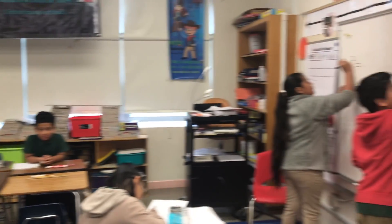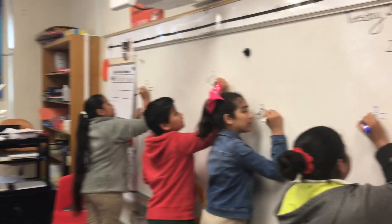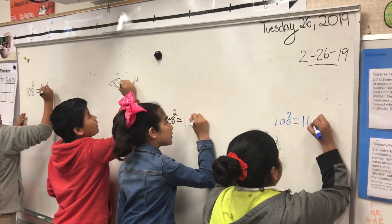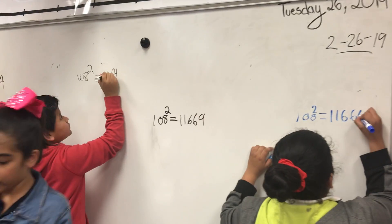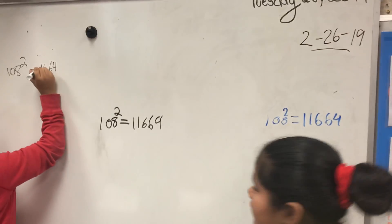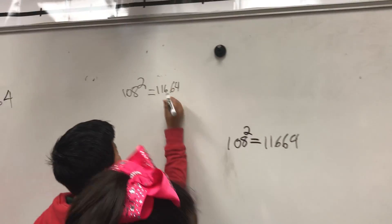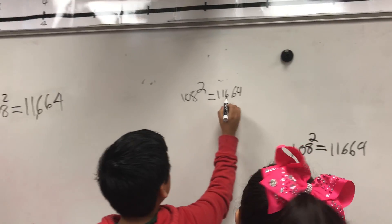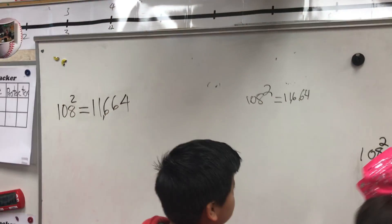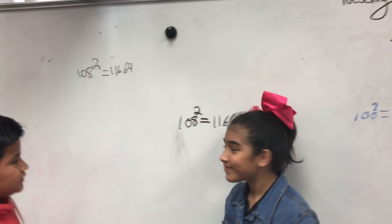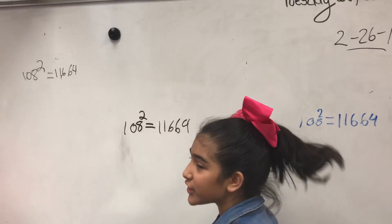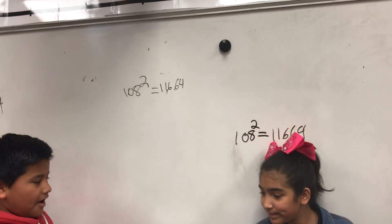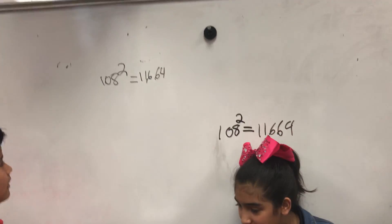Okay, 108. How much is 108 to the power of two? Okay, three seconds. And what's the answer? 11,664. Yeah, 11,664.